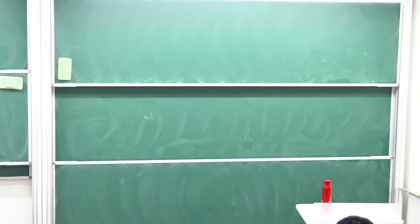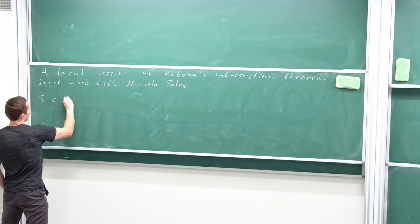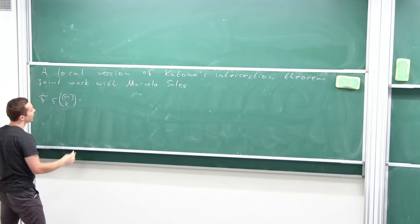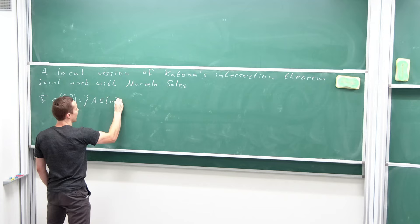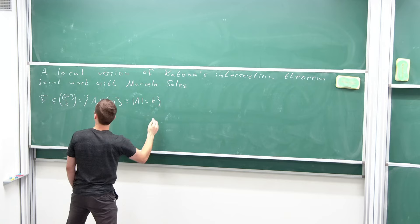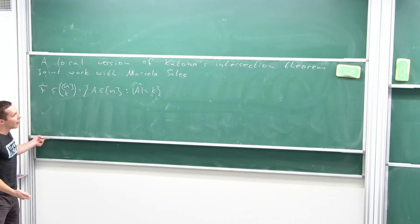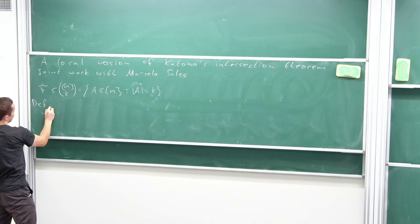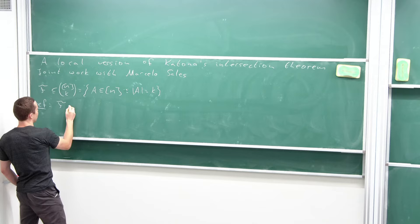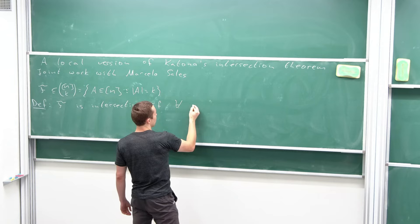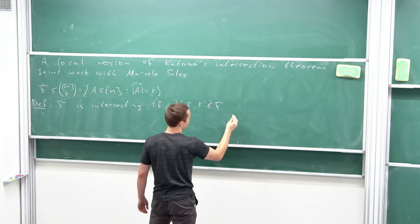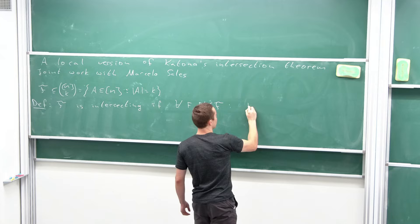The topic is set in extremal set theory, and we will generally consider families which are k-uniform. We write this where this is just the set of all k-subsets of n, written as n choose k.